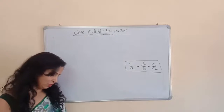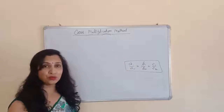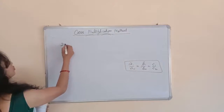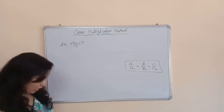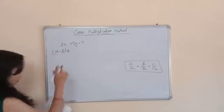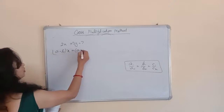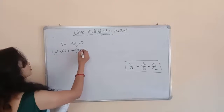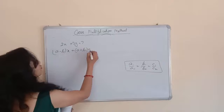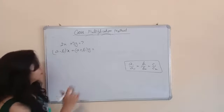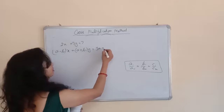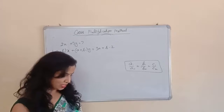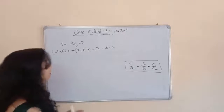Infinite solution means the equations are coincident — they lie on top of each other. The condition for coincident lines is: a1/a2 = b1/b2 = c1/c2. I am taking the first part of the second question. The equation is 2x + 3y = 7, and (a-b)x + (a+b)y = 3a + b. You have to find a and b given that the equation has an infinite number of solutions.